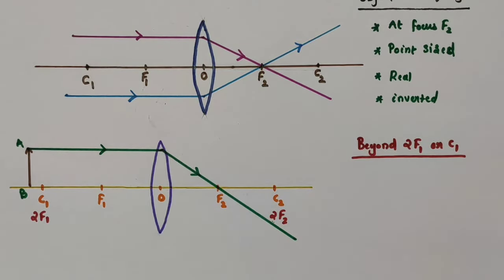The characteristics of the image formed when the object is at F1: the two rays are parallel so they intersect at infinity — the image will be formed at infinity. It will be highly enlarged and it will be a real and inverted image.